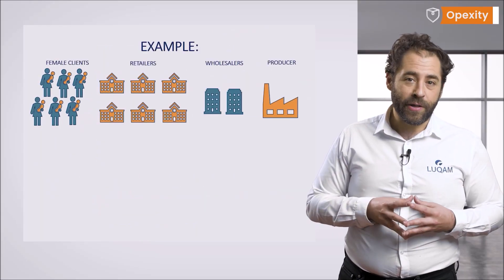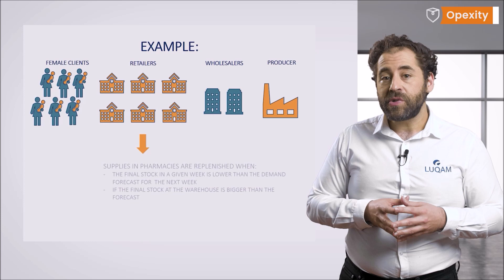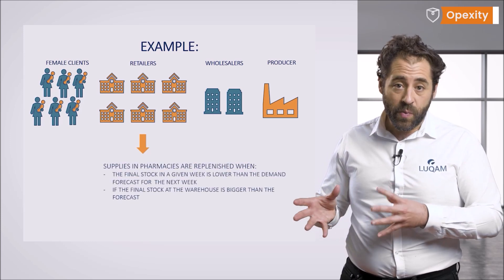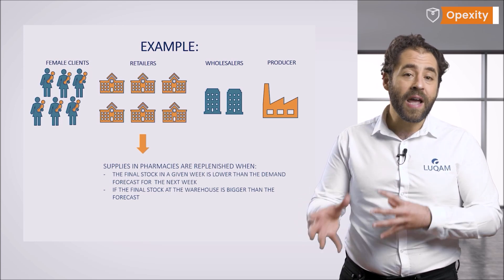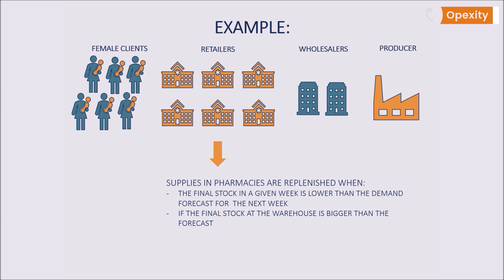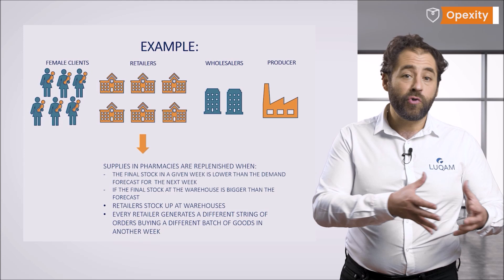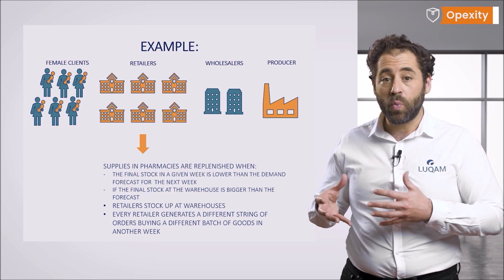Now let's look at the retailers. The inventories are replenished when the final stock at the warehouse in a given week is lower than the demand forecast for the next week. If the final stock at the warehouse is bigger than forecast, the retailer refrains from buying. He generates a string of orders which takes the value of the order quantity Q or zero. Retailers stock up in warehouses, and every retailer generates a different string of orders, buying a different batch of goods in another week.